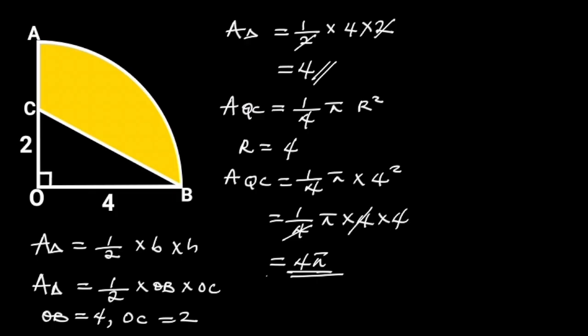Now we know the area of the triangle, and the area of the quarter circle. Let's go ahead and find the area of the shaded portion. The area of the shaded portion is equal to the area of the quarter circle, minus the area of the triangle.